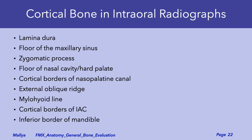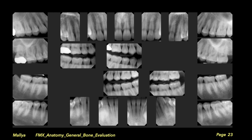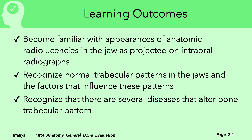Note that when describing findings in hyperparathyroidism and fibrous dysplasia, the lamina dura was discussed — which is cortical bone. Remember that in addition to the lamina dura, there are several other sites of cortical bone to evaluate when assessing the radiological anatomy of the maxilla and mandible, and these should be included alongside assessments of trabecular bone. To summarize the learning objectives: you should recognize anatomical radiolucencies in the jaw on intraoral radiographs, identify normal trabecular patterns and factors that influence them, and recognize diseases that alter the bony trabecular pattern, identifying patterns that are definitely abnormal.